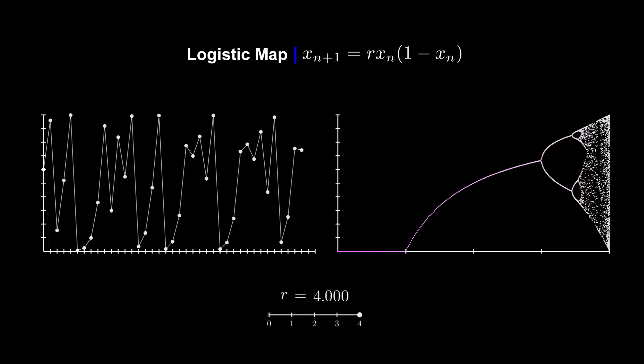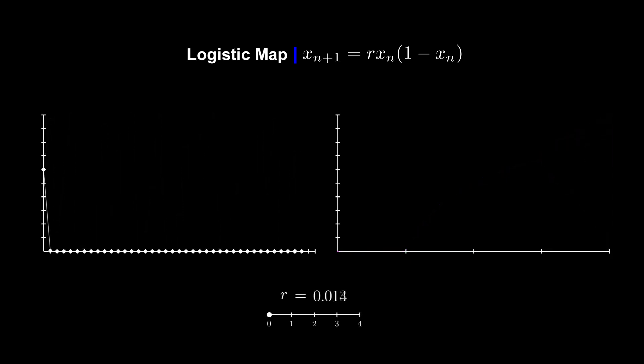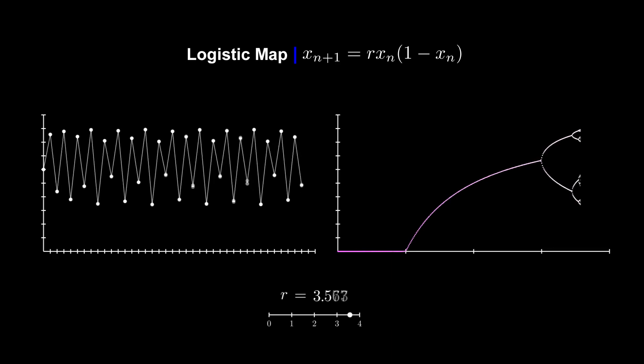The logistic map is interested in the long term behavior of a population, and it demonstrates how a small change in the initial condition can drastically change the long term outcome.